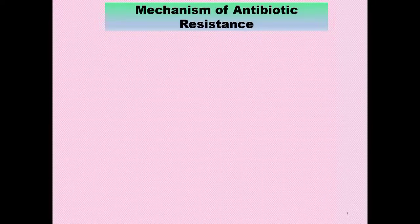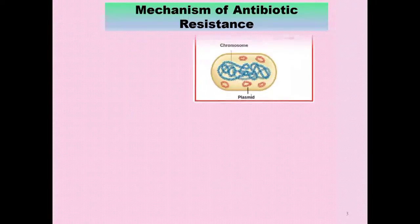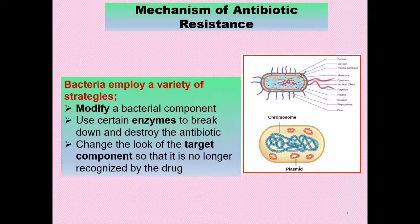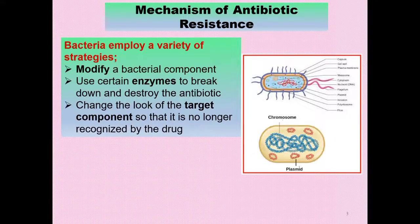Mechanism of antibiotic resistance. How do bacteria become resistant against the antibiotics? Bacteria can modify bacterial components and use certain enzymes to break down and destroy the antibiotics. They can also change the look of the target component.